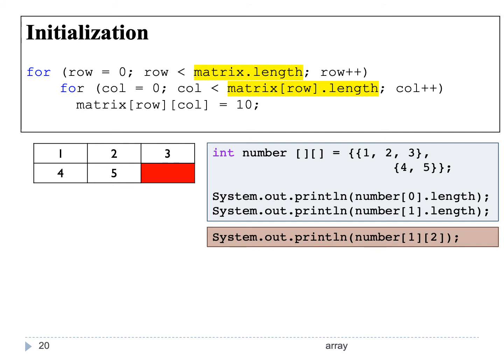From this, we know we have 2 rows. The first row has 3 columns with values 1, 2, and 3. The second row has only 2 columns with value 4 at column 0 and value 5 at column 1, as shown in the table. Within the second row, we cannot access the third column — if we try number[1][2], it will give us an ArrayIndexOutOfBoundsException because column 2 does not exist in row 1. This is shown in the red box.